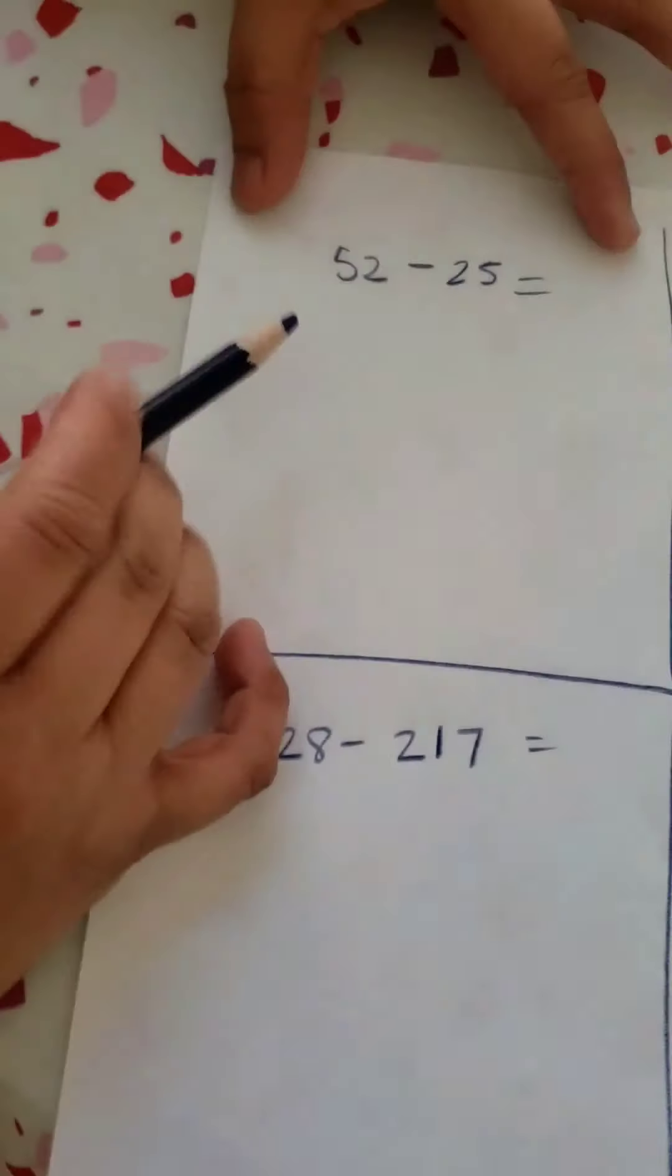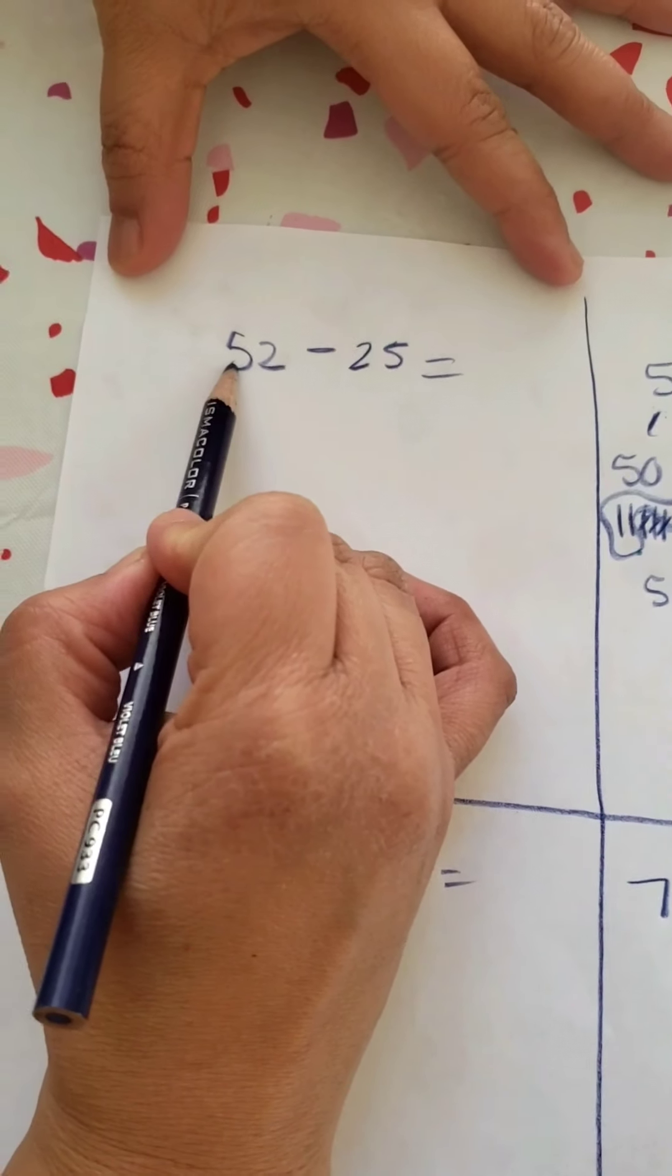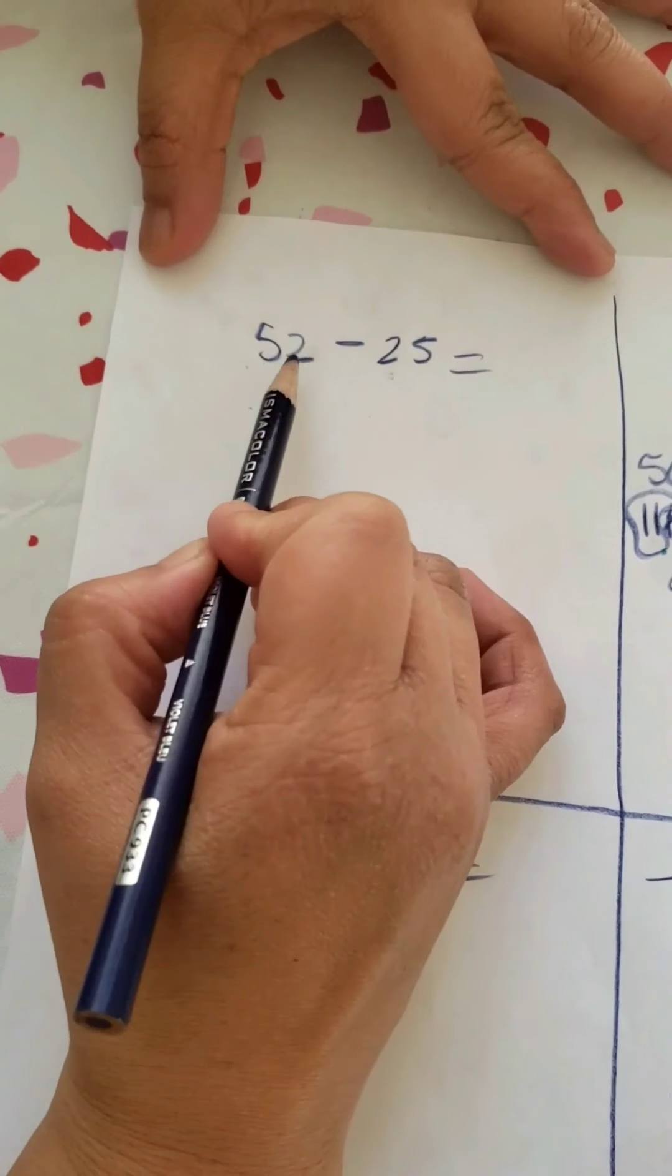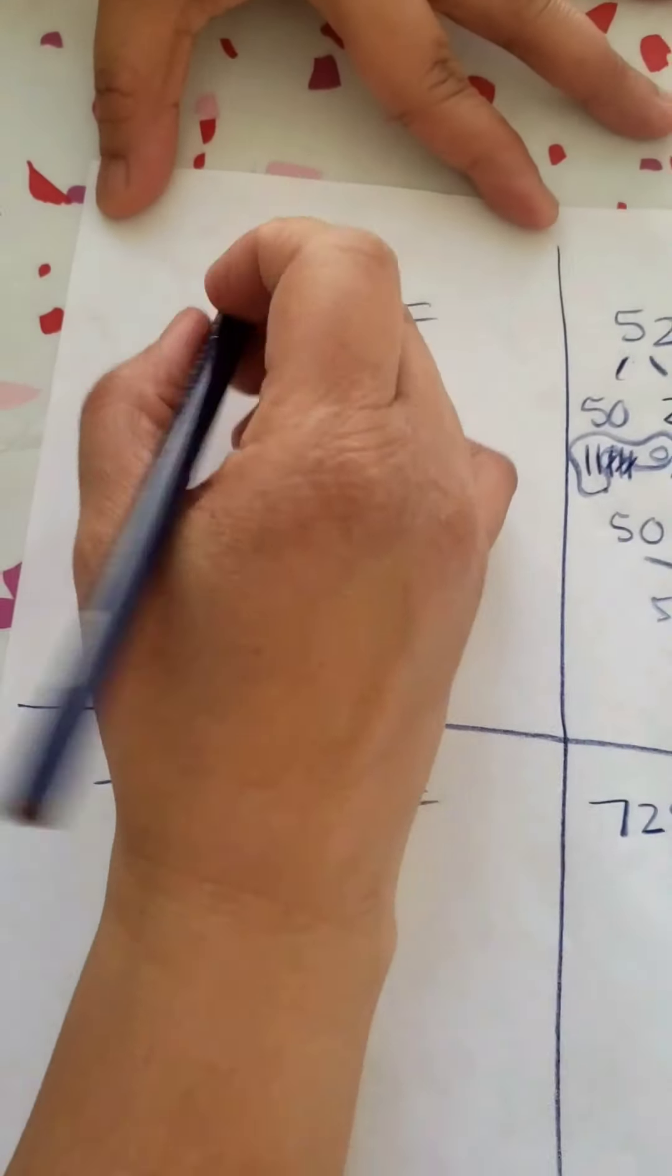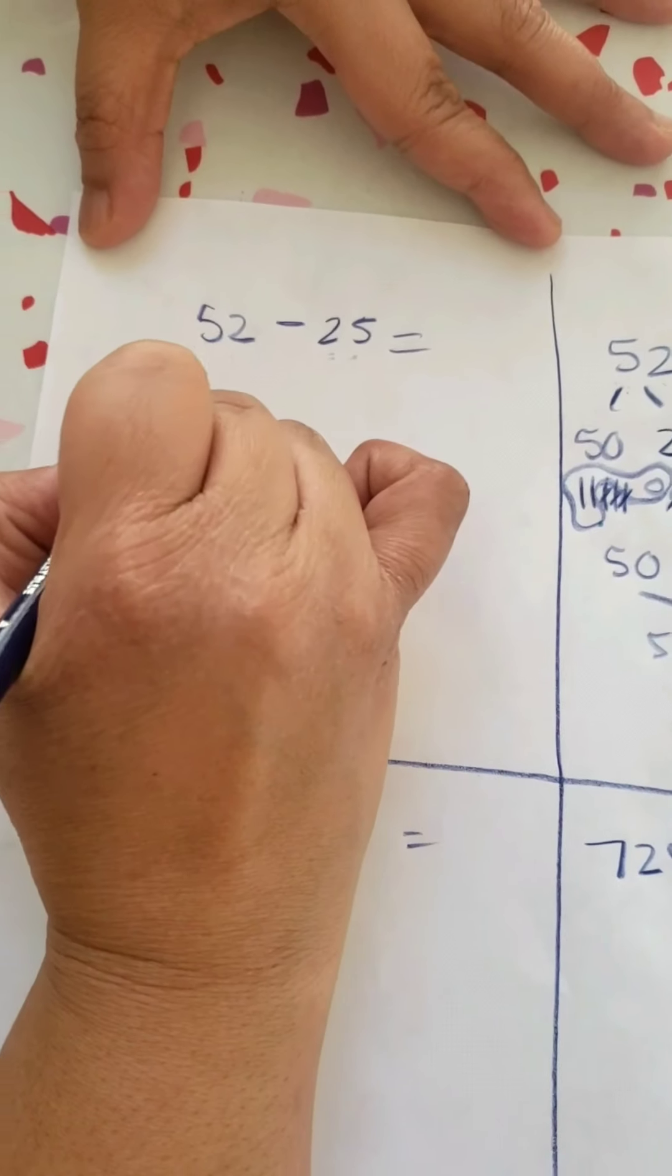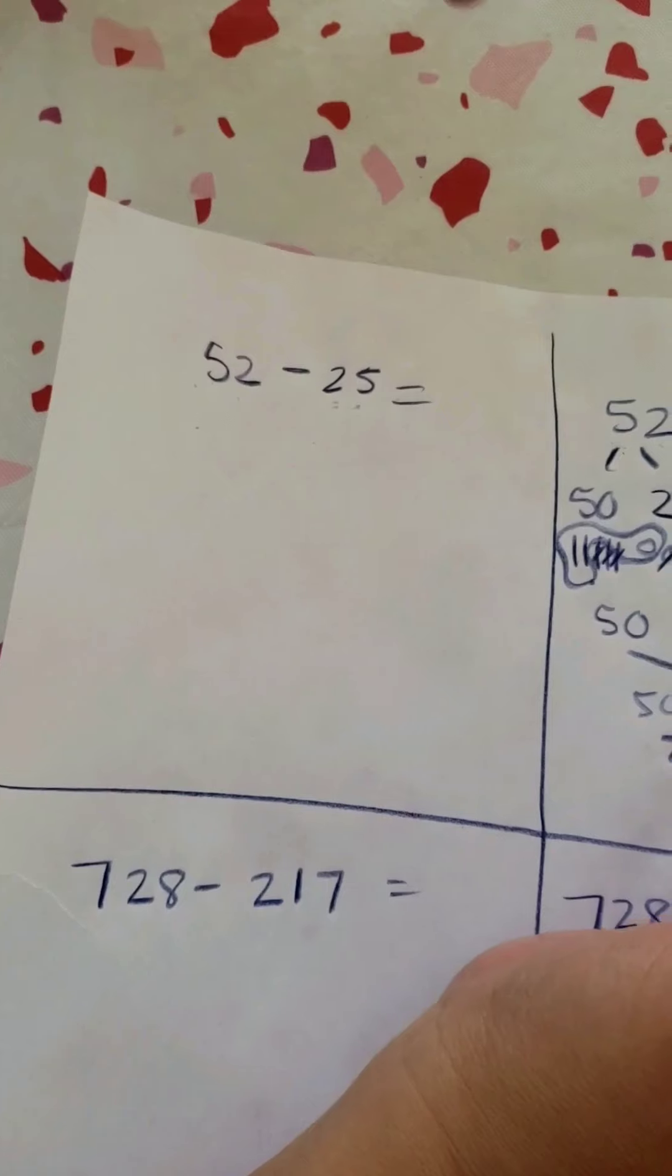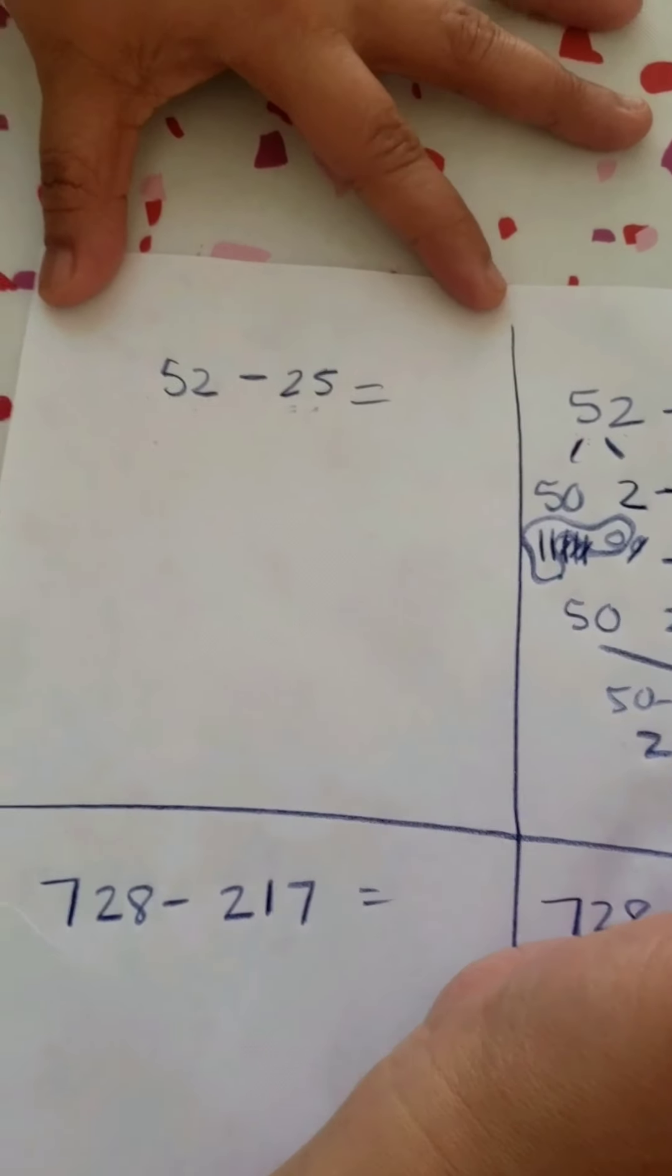Now I have something that looks like this. This is regrouping because I know that my tens here, my tens place is greater than my tens place here. My 50 is greater than my 20, but my 2 ones is not greater than my 5 ones. So what I'm going to be doing is something that's called regrouping. A lot of us talked about this and we called it borrowing or carry the 1. We call it regrouping here.